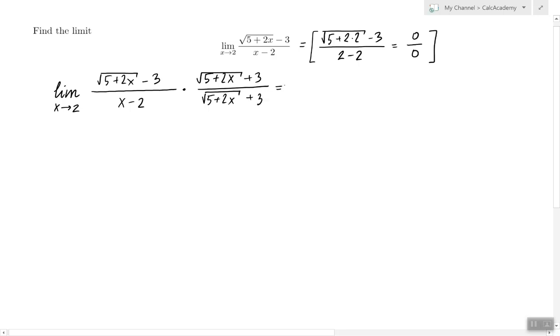Let's simplify the numerator and the numerator now becomes 5 plus 2x minus 3 squared. All that divided by x minus 2 times square root 5 plus 2x plus 3.